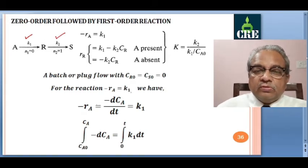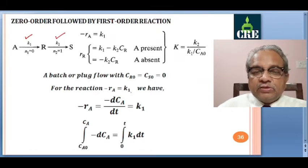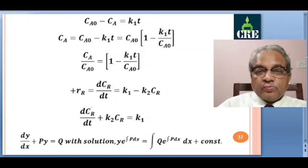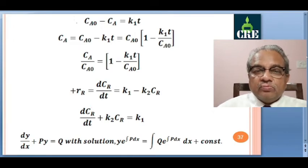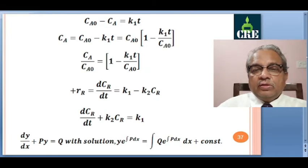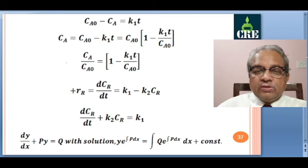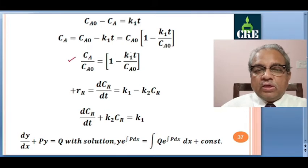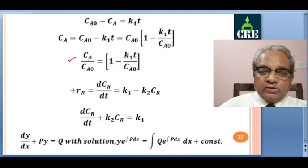With CR0 = 0, for zero order: dCA/dt = −K1, so CA = CA0 − K1·t, or CA/CA0 = 1 − K1·t/CA0. A is completely consumed at t = CA0/K1. The rate equation for CR when A is present: dCR/dt + K2·CR = K1. This is a first-order linear ODE of the form dy/dx + Py = Q.